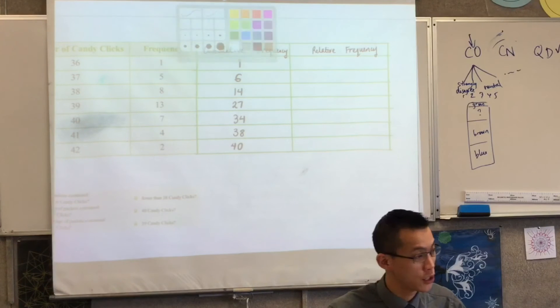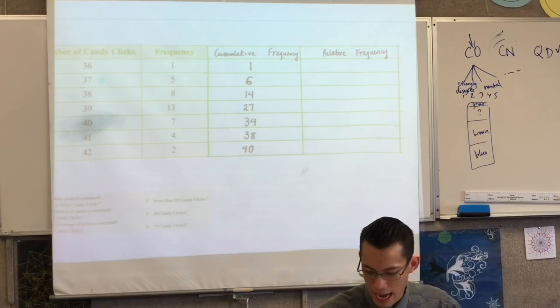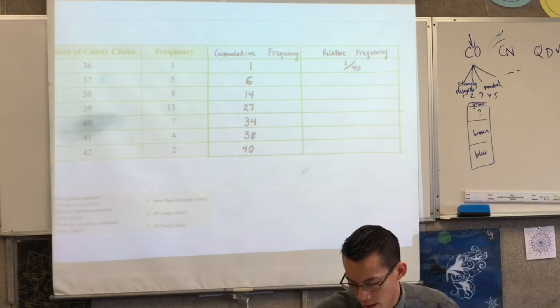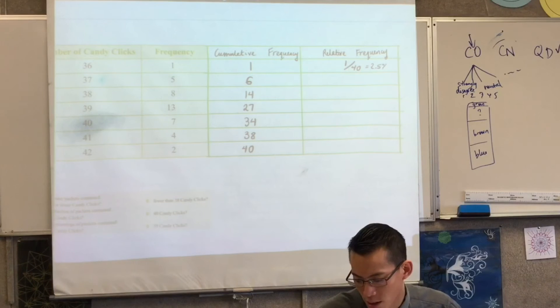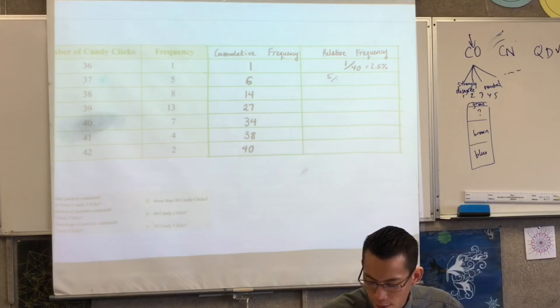So now this is as simple as it gets. I'm going to write each one as a fraction. 36 candy clicks, it happens once out of 40. That's it. I could write that. That's two and a half percent. They might ask you for a percentage. It doesn't matter too much. This is going to be five out of 40, which I can simplify. This will be eight out of 40, which I can also simplify.